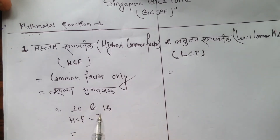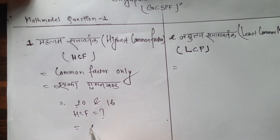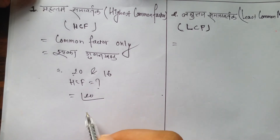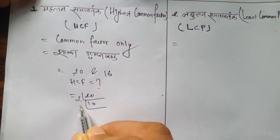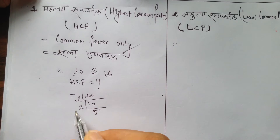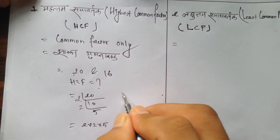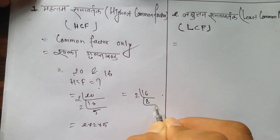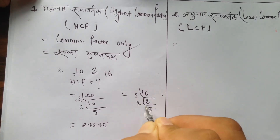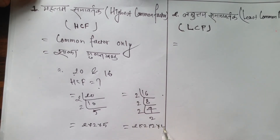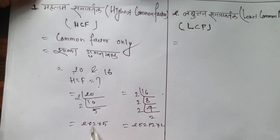This is the factorization of 20. 20 can be factorized as 2 × 2 × 5, which is 4 × 5 = 20. Now, 16 means 2 × 2 × 2 × 2, which is 2 to the power of 4, giving us 16.